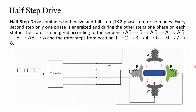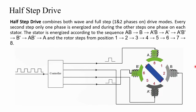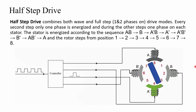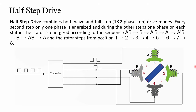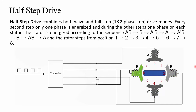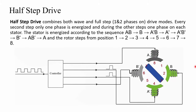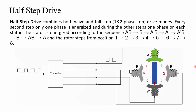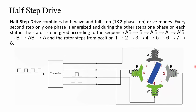The half step drive combines both wave and full step, switching between one and two phases drive modes. During every second step only one phase is energized, and during the other steps one phase on each stator is energized. The stator is energized according to the sequence: AB, then B only, then A-dash B, then A-dash only, followed by A-dash B-dash, then B-dash, then A B-dash, then A — and the rotor steps from position 1, 2, 3, 4, 5, 6, 7, 8.